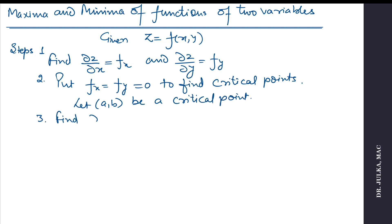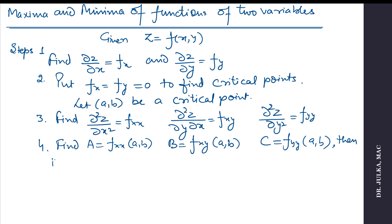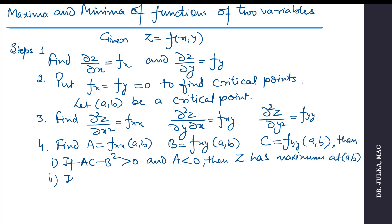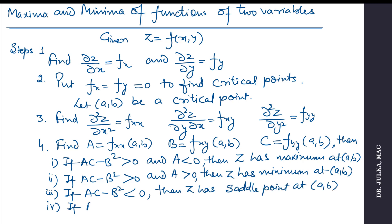In the next step, we find the double derivatives: fxx, fxy, and fyy. We find the value of a, b, c at the critical point (a, b) by substituting in the second derivatives. If ac minus b² is positive and a is negative, then z has a maximum value at (a, b). If ac minus b² is positive and a is positive, then z has a minimum value at (a, b). If ac minus b² is negative, then z has a saddle point at (a, b). And if ac minus b² equals 0, then no conclusion can be drawn.